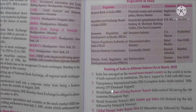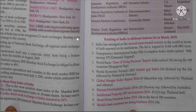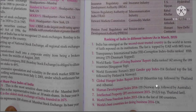Rankings of India in different indexes as of March 2015: First, India has emerged as the second most trusted country in the world in terms of faith and response on its institutions; the list is topped by UAE with 84 percent trust. Second, in the Transparency International corruption index, India ranked 85th among 175 countries; Denmark topped this index. Third, in the World Bank Ease of Doing Business report, India ranked 142nd among 189 countries; Singapore topped.